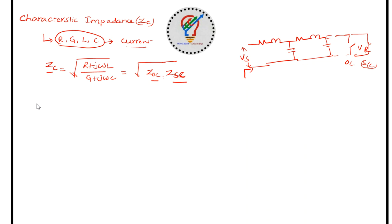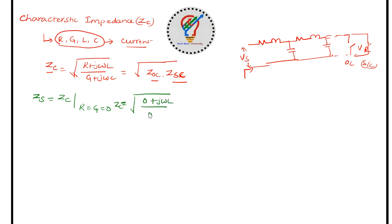The difference between characteristic impedance and surge impedance is that surge impedance is the characteristic impedance when resistance R and conductance G are both equal to zero. So Zc = √[(0 + jωL) / (0 + jωC)]. The jω terms cancel, giving √(L/C).